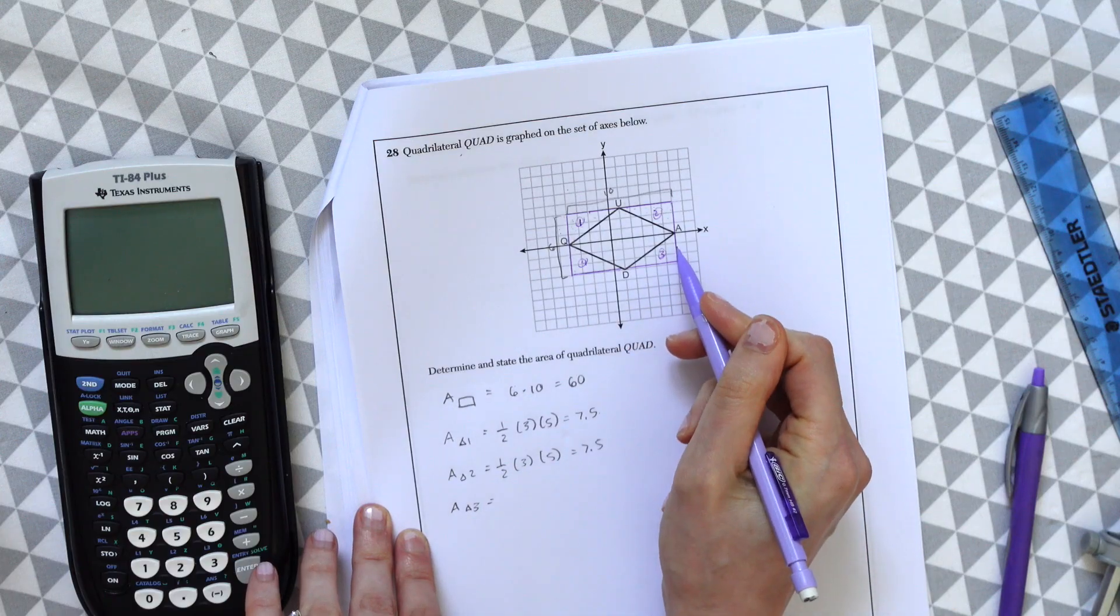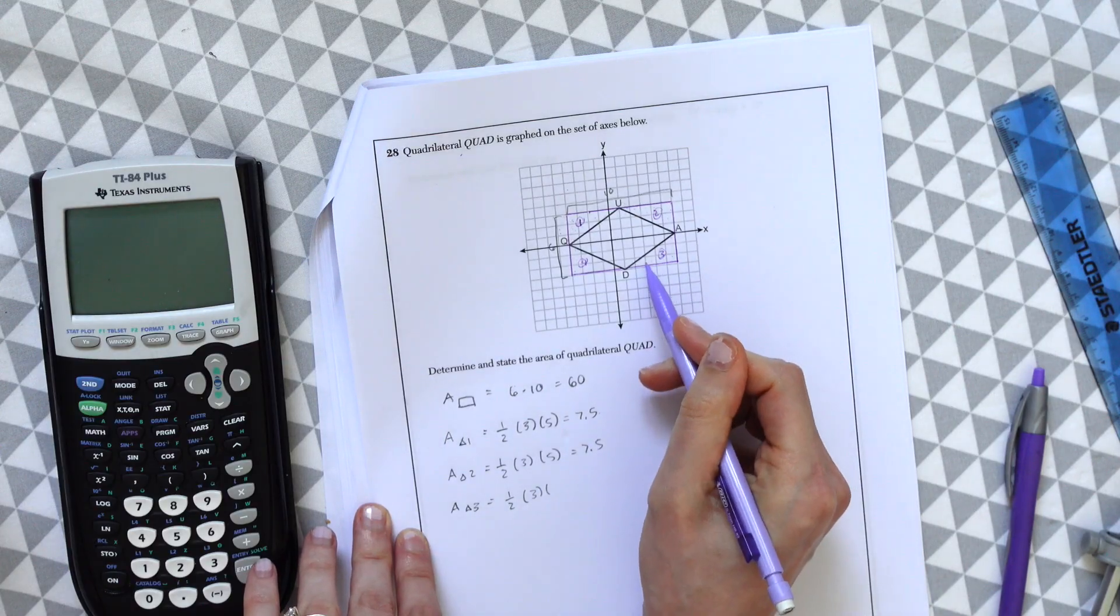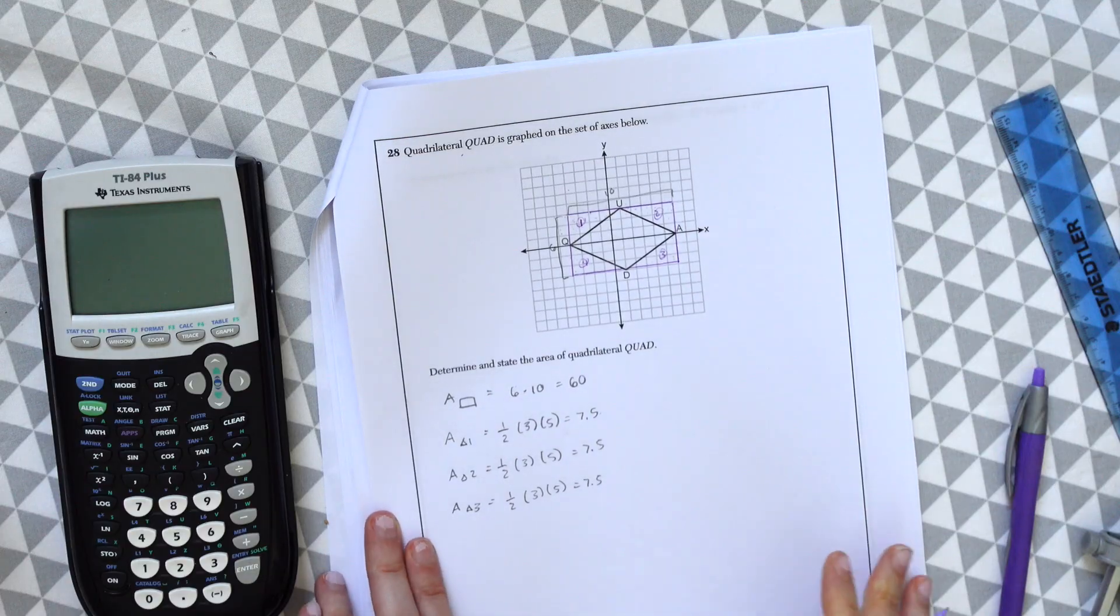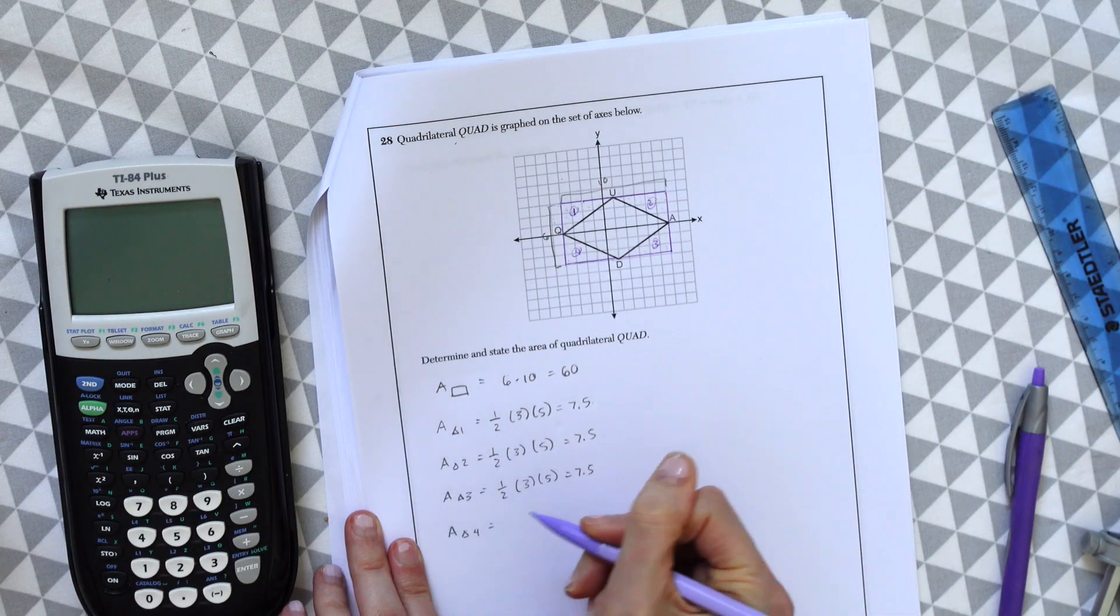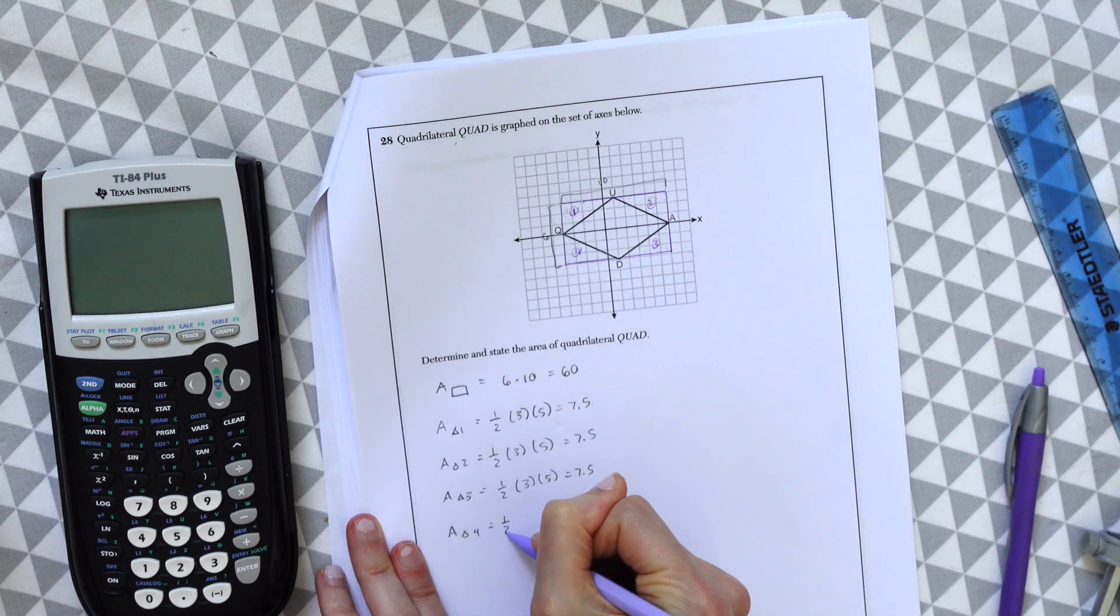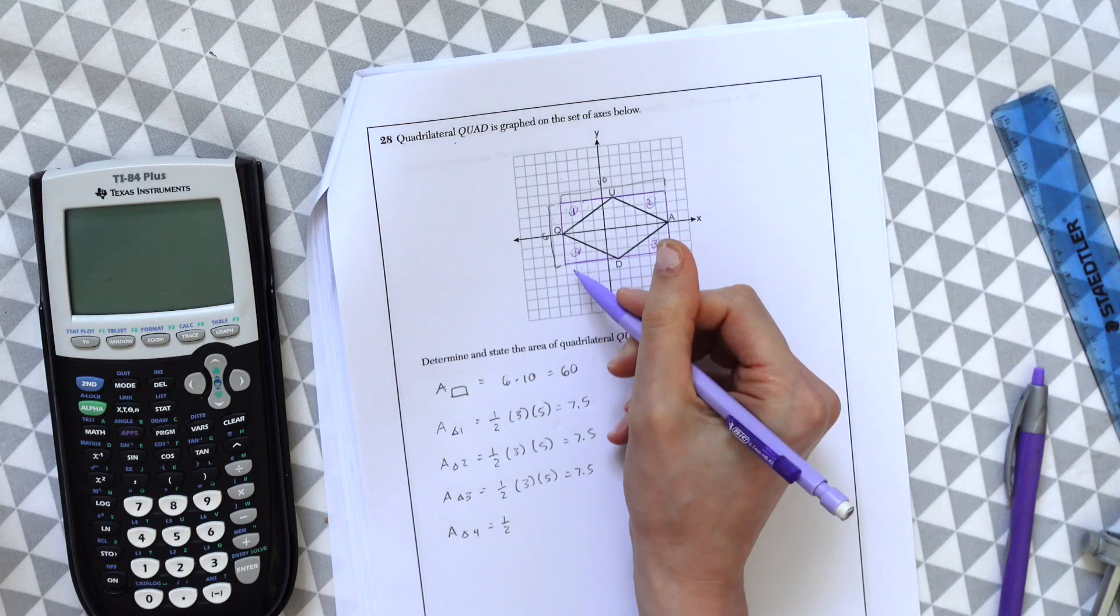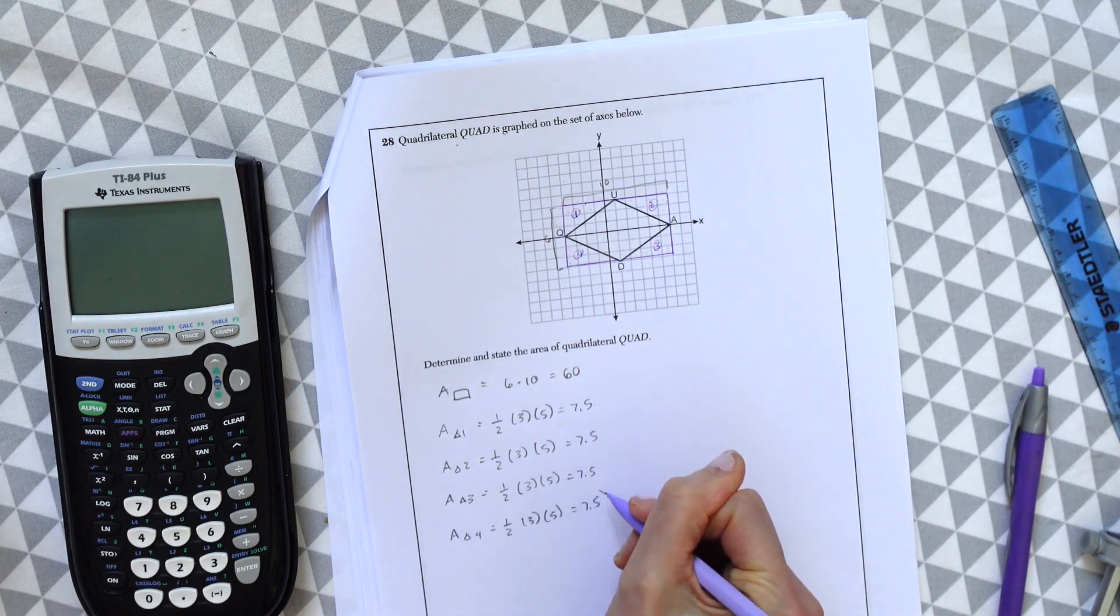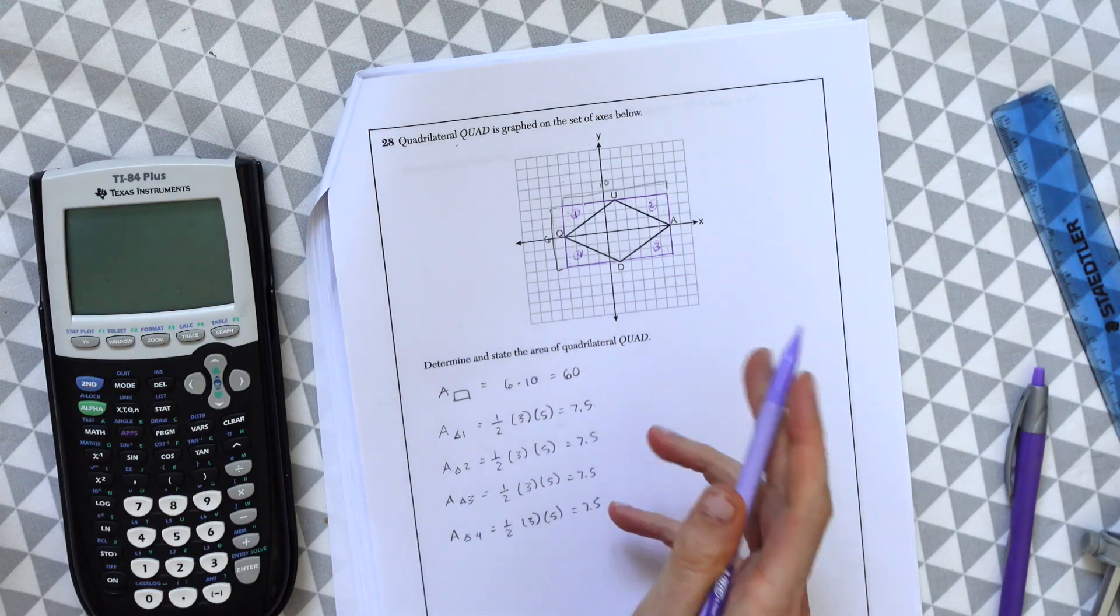And let's keep going. Let's find triangle three, this area. These triangles will happen to be the same, but this kind of question comes up a lot and that doesn't always happen. So just be careful and always make sure each triangle area is the same or different.